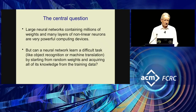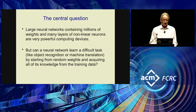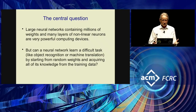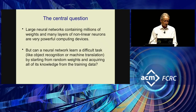The central question for neural nets was always: we know that big neural nets with lots of layers and nonlinear processing elements can compute complicated things. But the question is, can they learn to do it? Can you learn a task like object recognition or machine translation by taking a big net, starting from random weights, and somehow training it — changing the weights, so it changes what it computes?